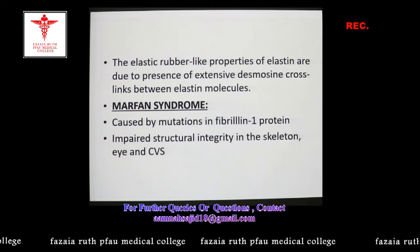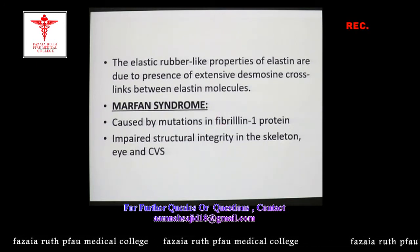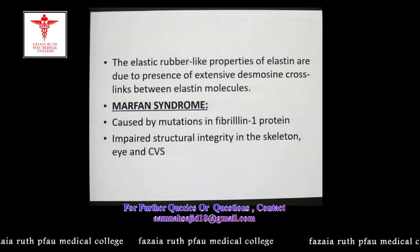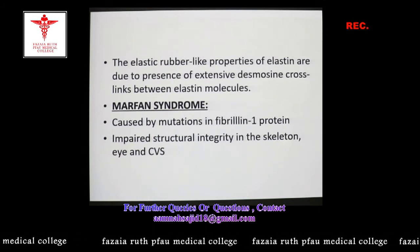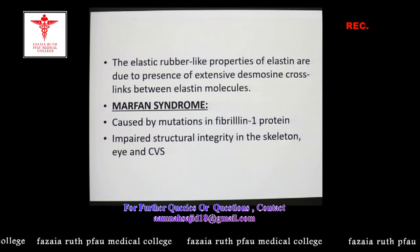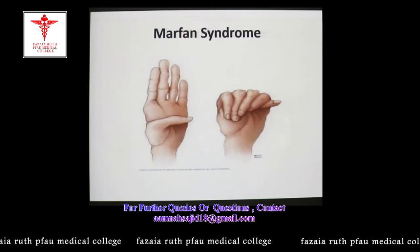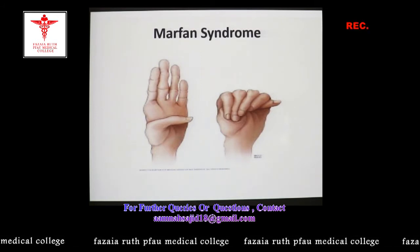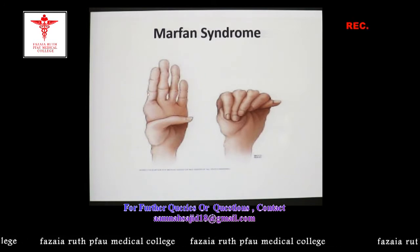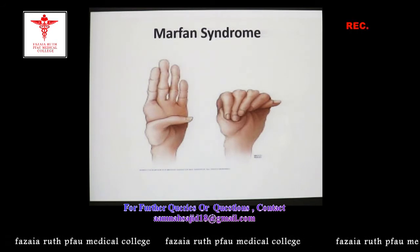Marfan syndrome is caused by mutations in the gene coding for fibrillin-1 protein — the glycoprotein on which elastin molecules are deposited. Marfan syndrome is characterized by impaired structural integrity in the skeleton, eyes, and cardiovascular system. This figure shows the hands of a Marfan syndrome patient exhibiting joint hypermobility and long, spindly fingers, which are characteristic of the condition.